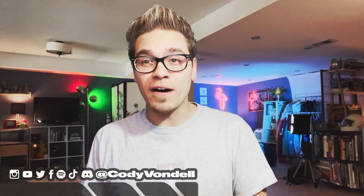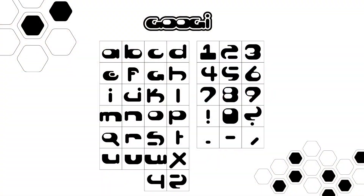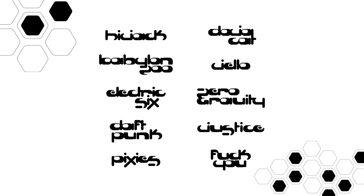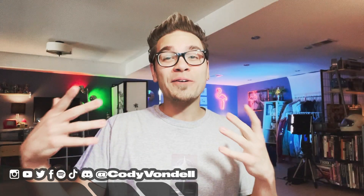I just released my brand new font. It's called Googie. It's available for free on my Discord and if you want to support me and my channel, you can also pick it up for just a few dollars over on my Etsy. I figured if I'm doing an ongoing series about the best free Y2K fonts, I might as well make my own contribution to it. So there it is — Googie, you can download it now for free.